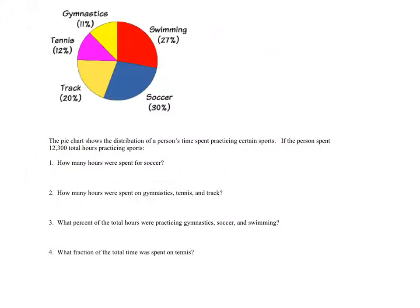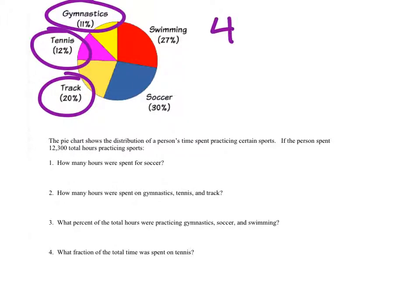Number two, how many hours were spent on gymnastics, tennis, and track? This is going to work the same way as the soccer example, except for we're going to have to add all three of these. So we've got gymnastics, tennis, and track. And if we combine all three of those, so we've got 20% plus 12% plus 11%, that would be 43%.